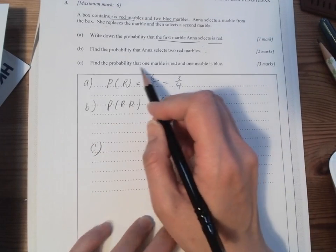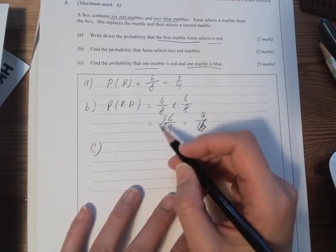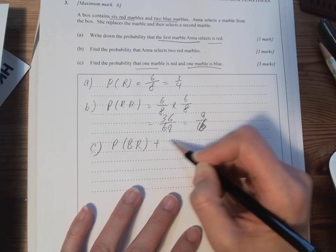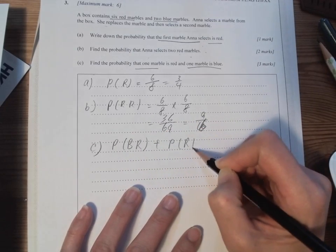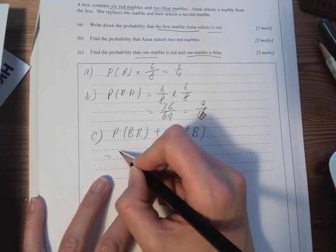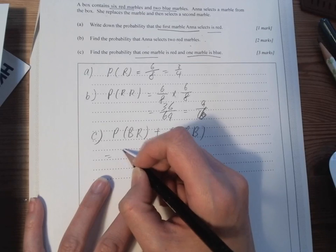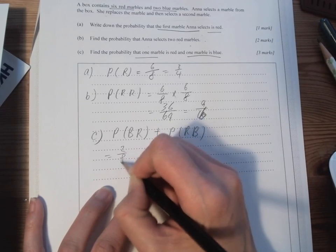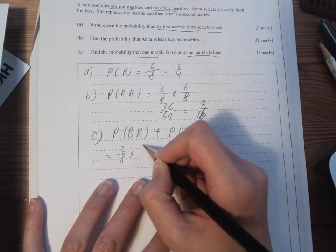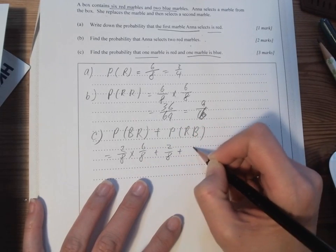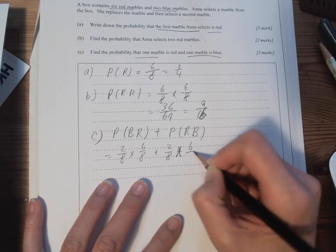And then C, the probability of one marble is red and one marble is blue, so we will need the probability of blue, red, plus probability of red, blue. Because it's replaced, so we have 2 over 8 times 6 over 8 plus 2 over 8 times 6 over 8 twice.